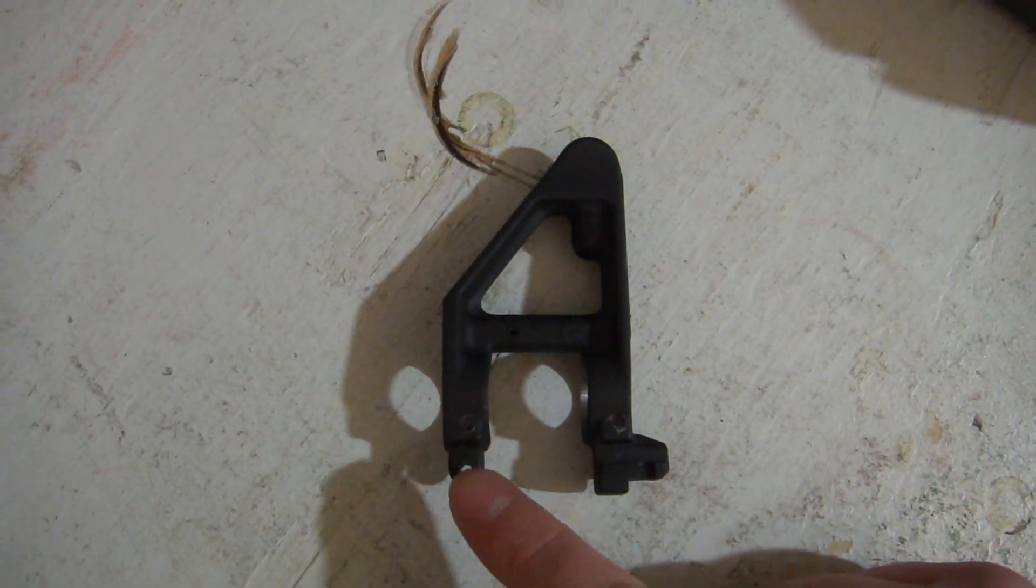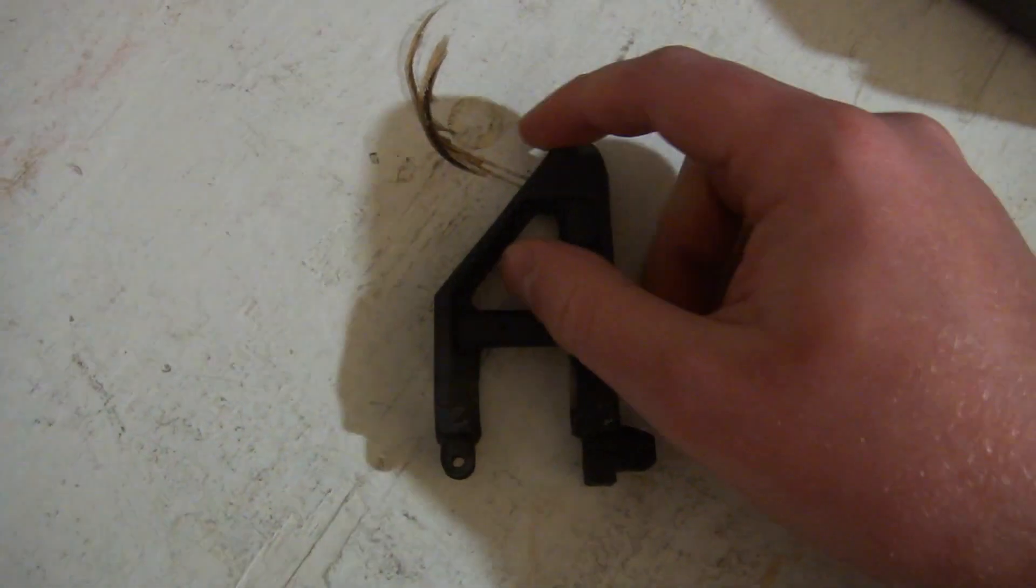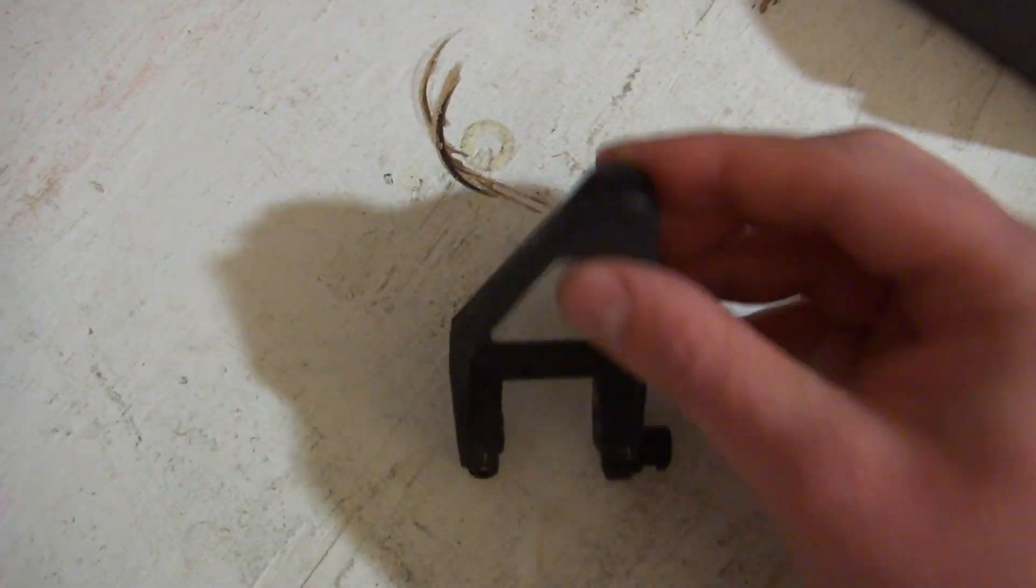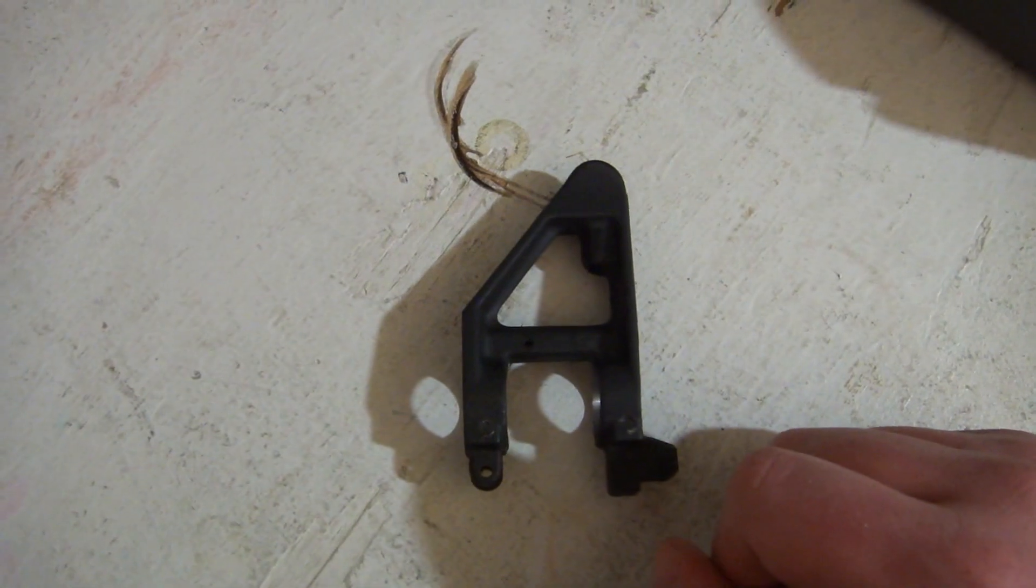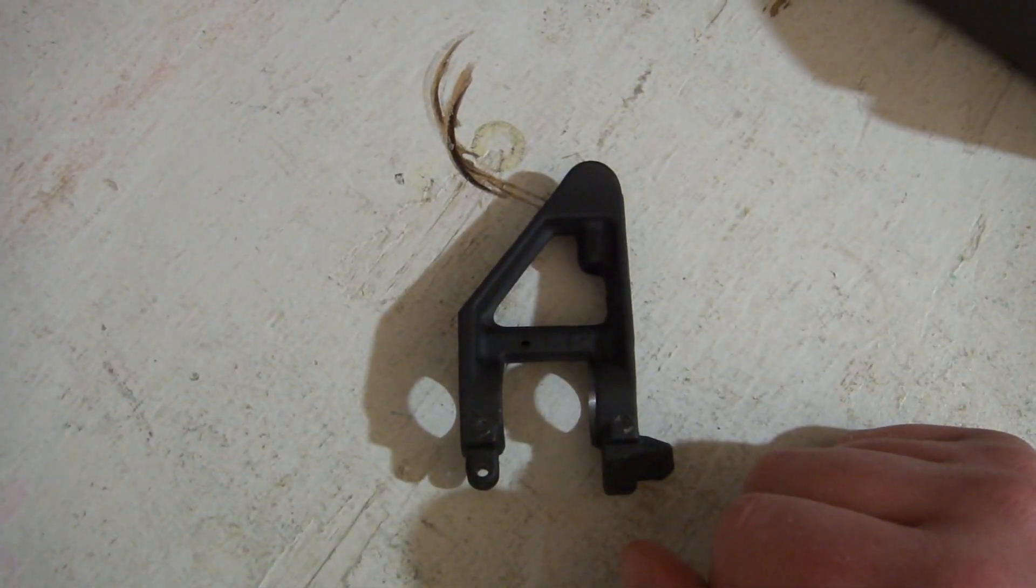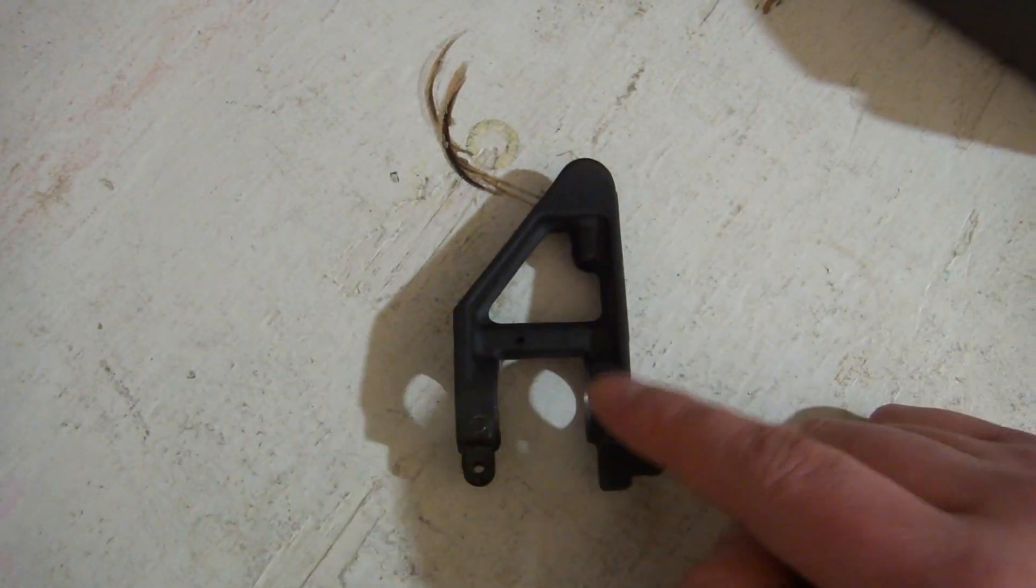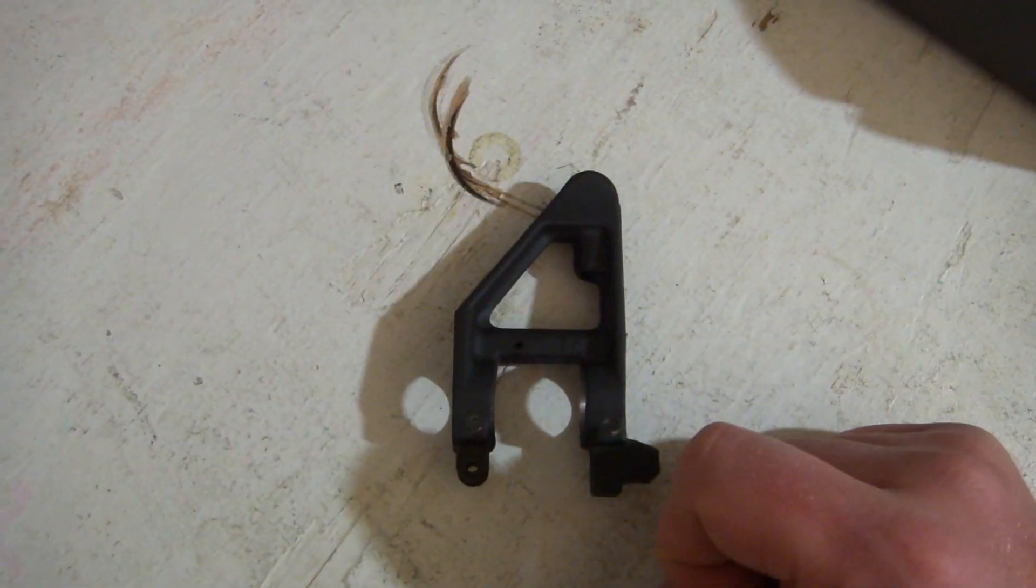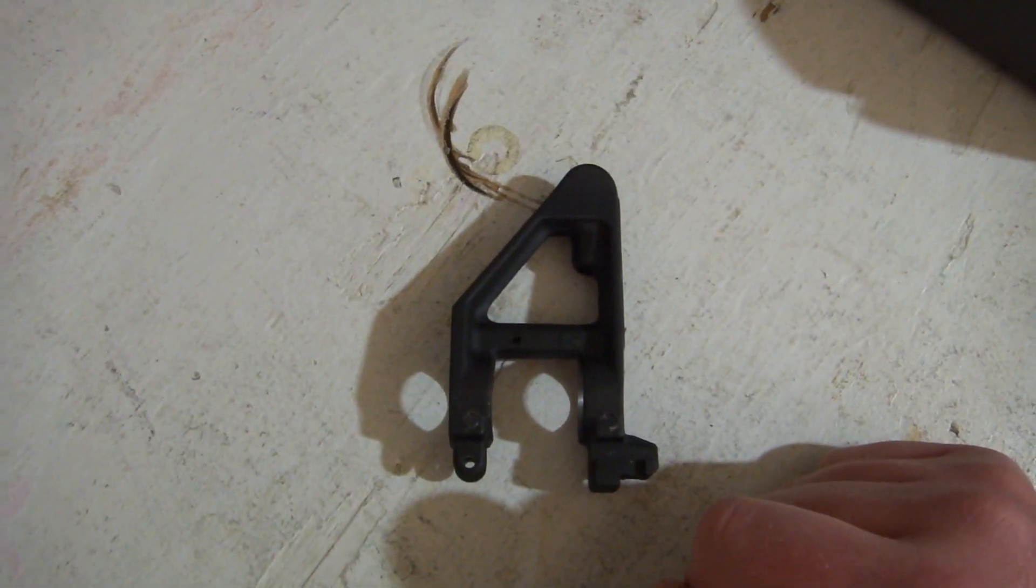An optional step would be to remove the sling swivel retaining pins and the front sight detent and front sight blade and spring in case you want to use those for a different project. I elected to just take all of them out. But if you want, you can just leave the retaining pins in and just cut off the sling swivel and cut off the front sight and not worry about retaining any of the pieces.